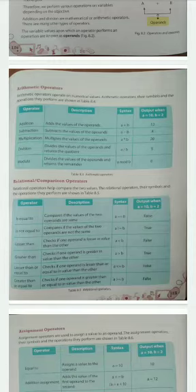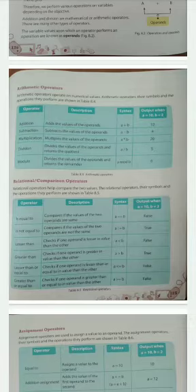First is arithmetic operator. Arithmetic operators operate on numerical values. The arithmetic operators, their symbols, and operations they can perform are shown in figure table 8.4. First is addition, adds two numbers. Second is subtraction, multiplication, division, and modulus.